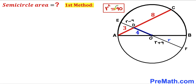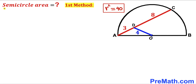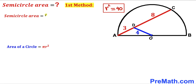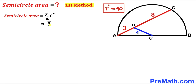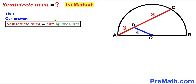So our r squared value is 40. For the final step, we calculate the area of the semicircle. The area of a full circle is pi r squared, so the semicircle area is pi divided by 2 times r squared. Substituting r squared equals 40, we get pi over 2 times 40, which simplifies to 20 pi square units — the area of this semicircle by the first method.